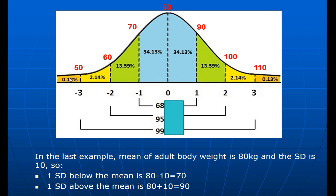Very rarely would you find a patient weighing 45 kg — speaking about adults — and very rarely someone over 110 kg. This is the normal distribution. Normal distributed data is not manipulated; this is the distribution from nature — we didn't touch this data.